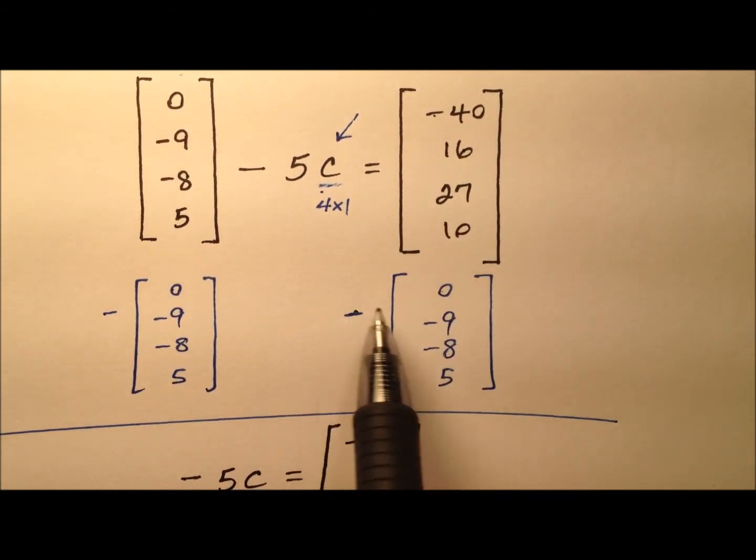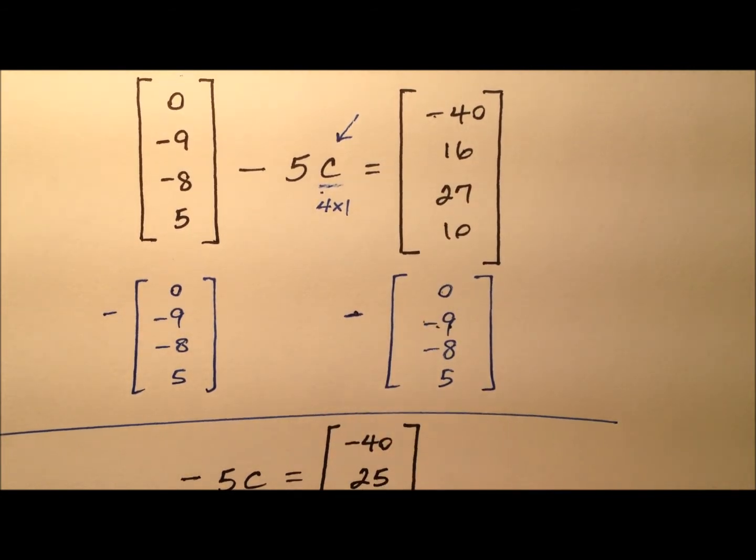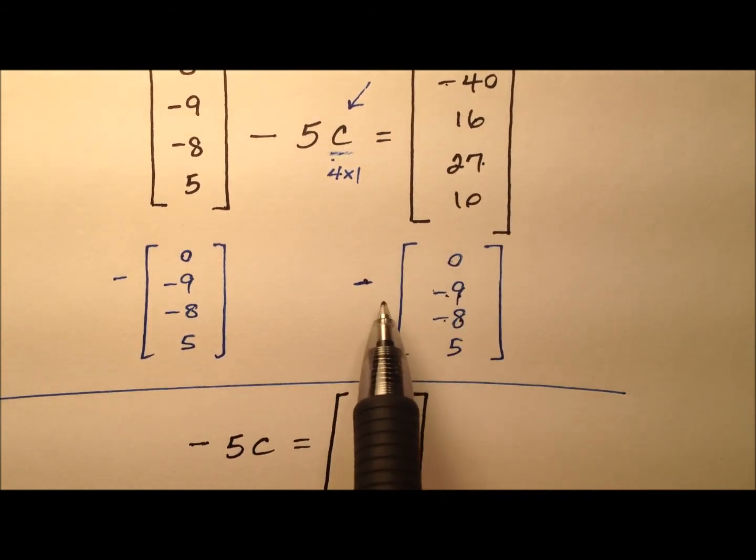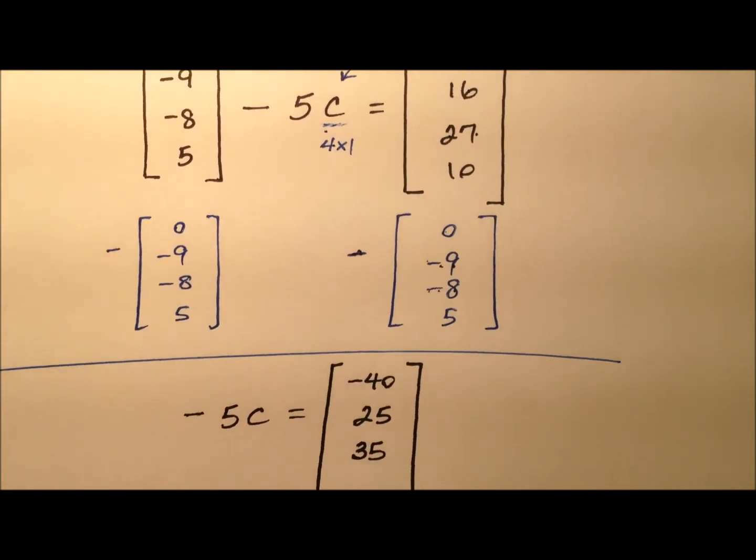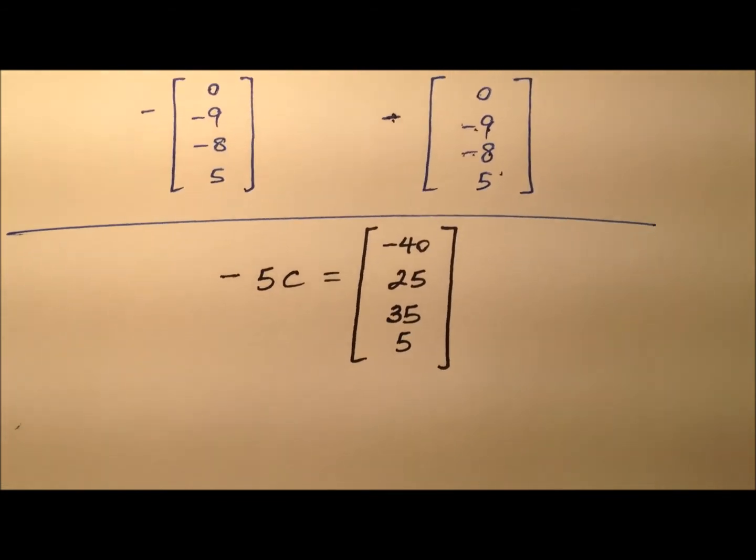16 minus a negative 9. When I'm subtracting a negative, it's adding, so 16 and 9 make 25. 27 minus a negative 8, same kind of thing. I'm subtracting the negative, so that'll add to give me 35. And finally, 10 minus 5 will be 5 right there.